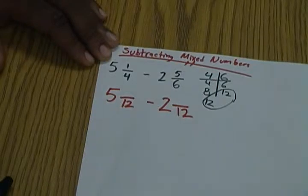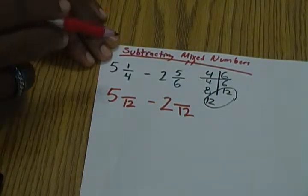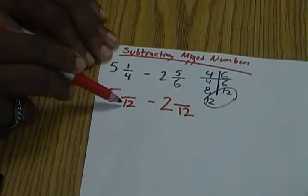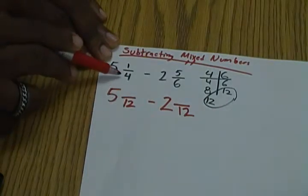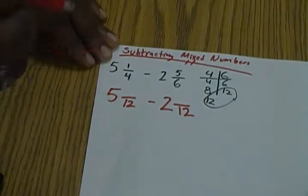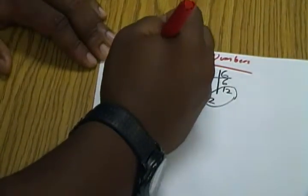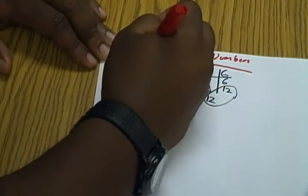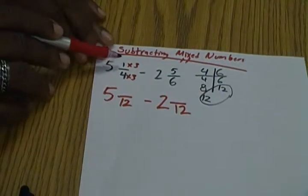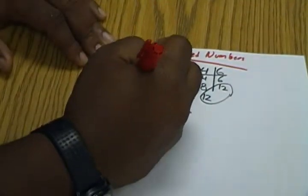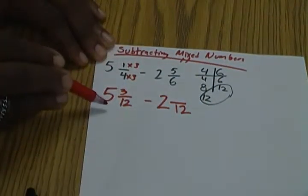From there, we need to go back up to the top and find out what our multiplier is. How did we get from 4 to 12? Well, we know 4 times 3 equals 12. So therefore, using our red still, we're going to multiply both numbers times 3. So 1 times 3 equals 3, and we already have 4 times 3 equals 12.